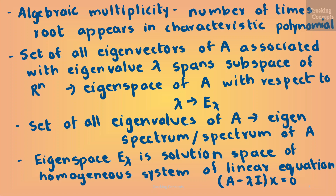The set of all eigenvalues of A is called the eigen spectrum, or just spectrum, of A. If lambda is an eigenvalue of A, then the corresponding eigenspace E_λ is the solution space of the homogeneous system of linear equations (A − λI)x = 0.